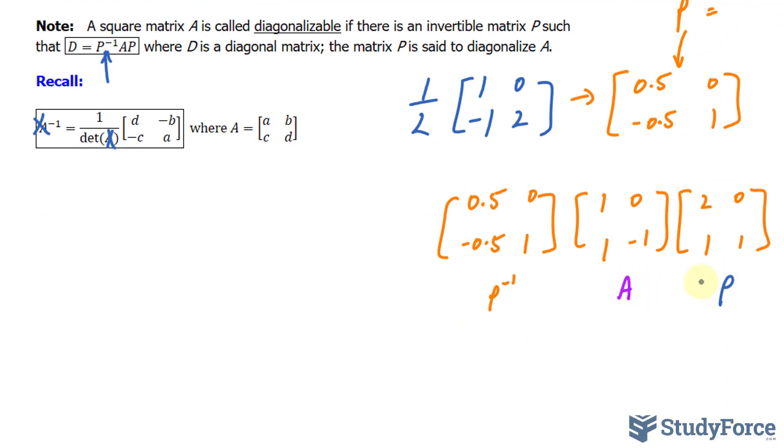If we multiply A and P together, we should end up with 2, 0, 1, and negative 1.